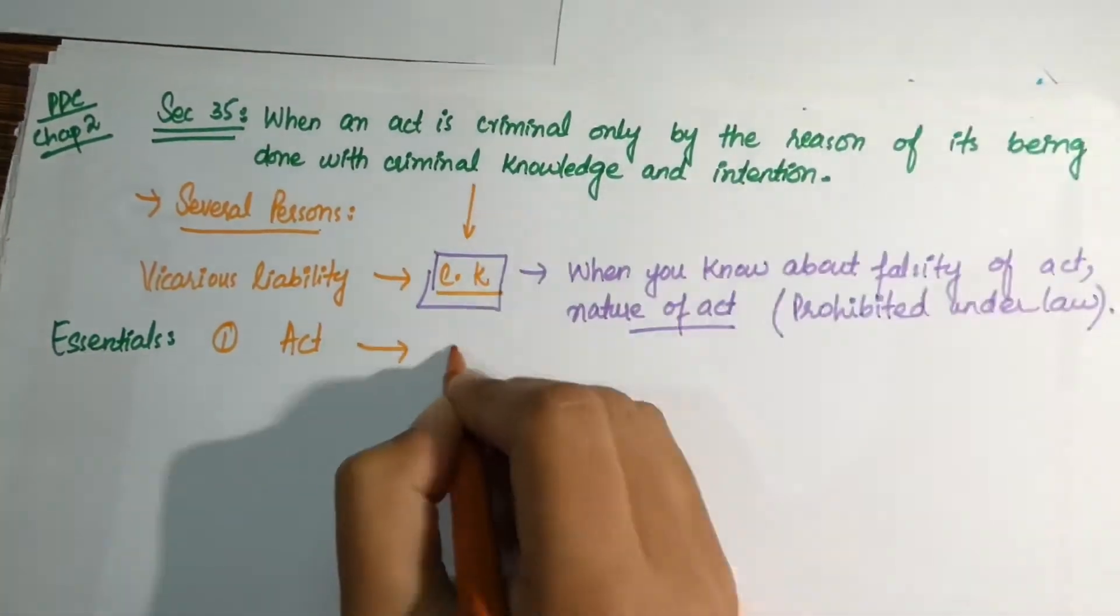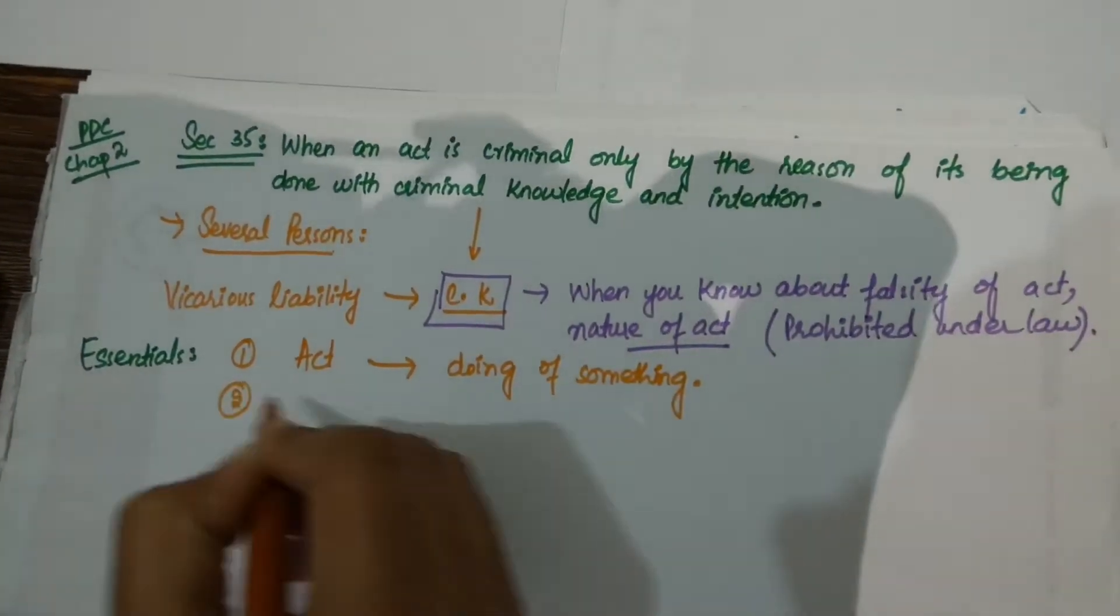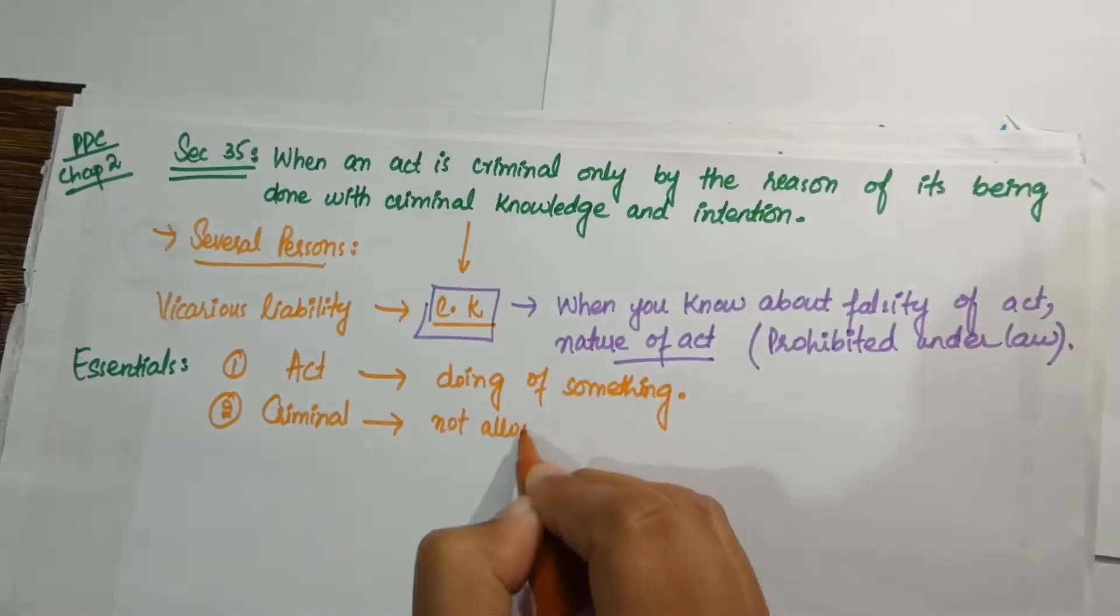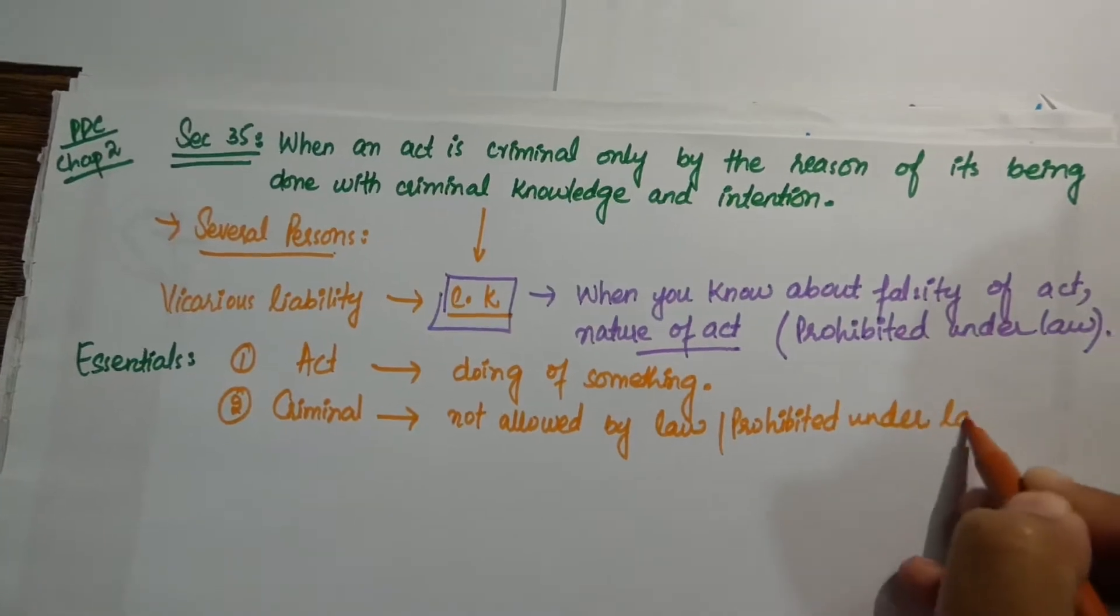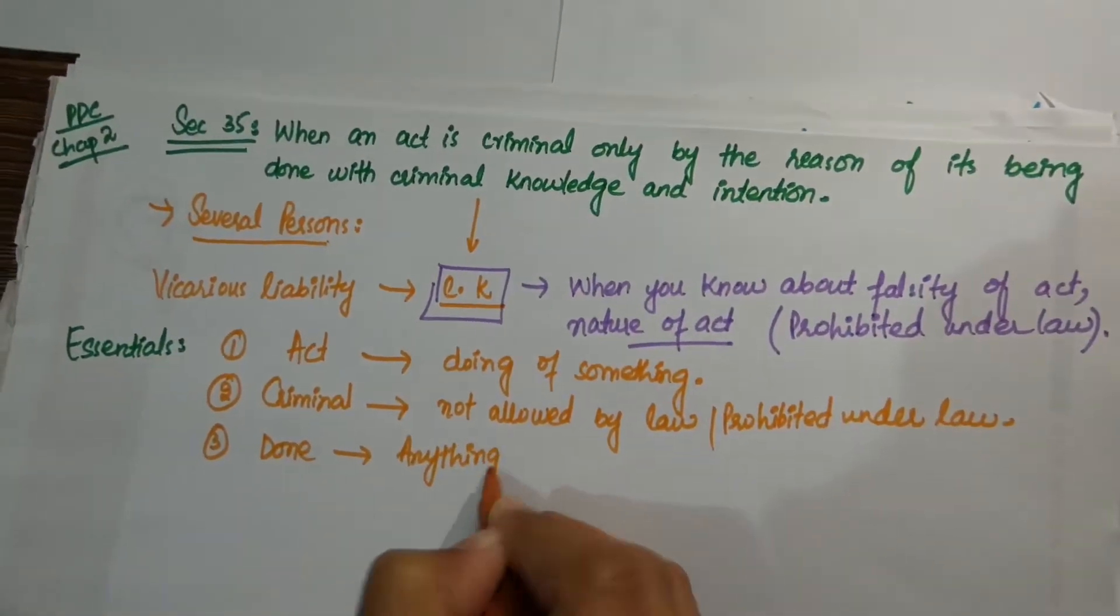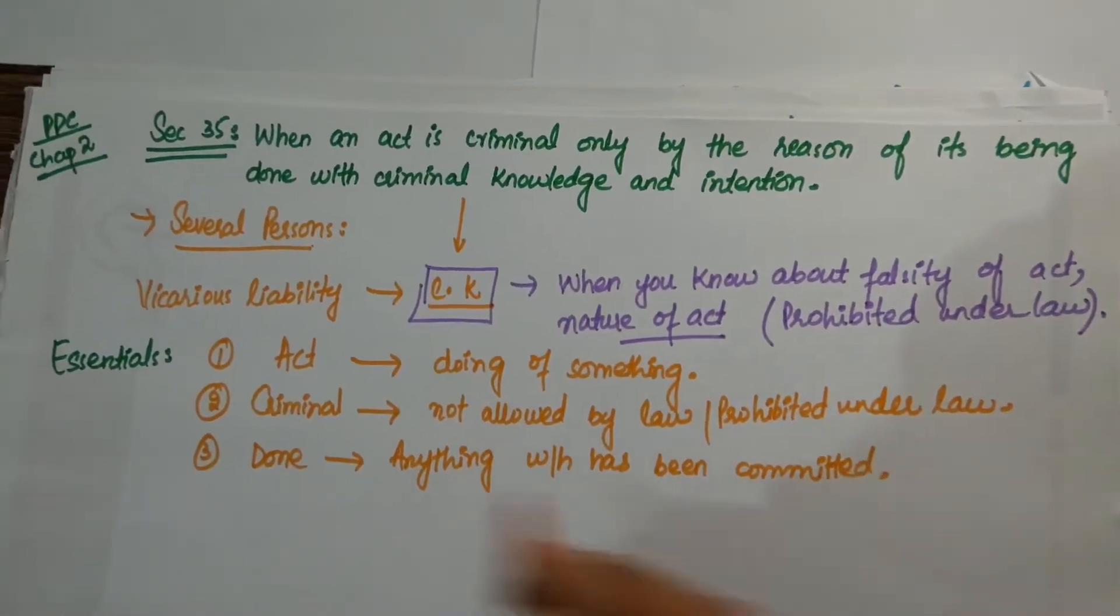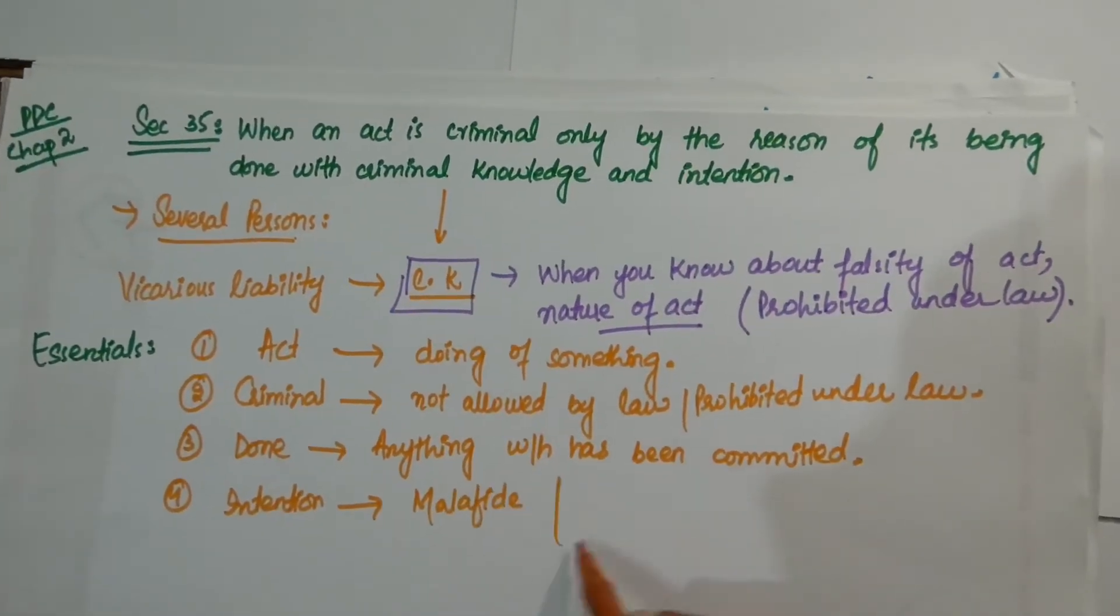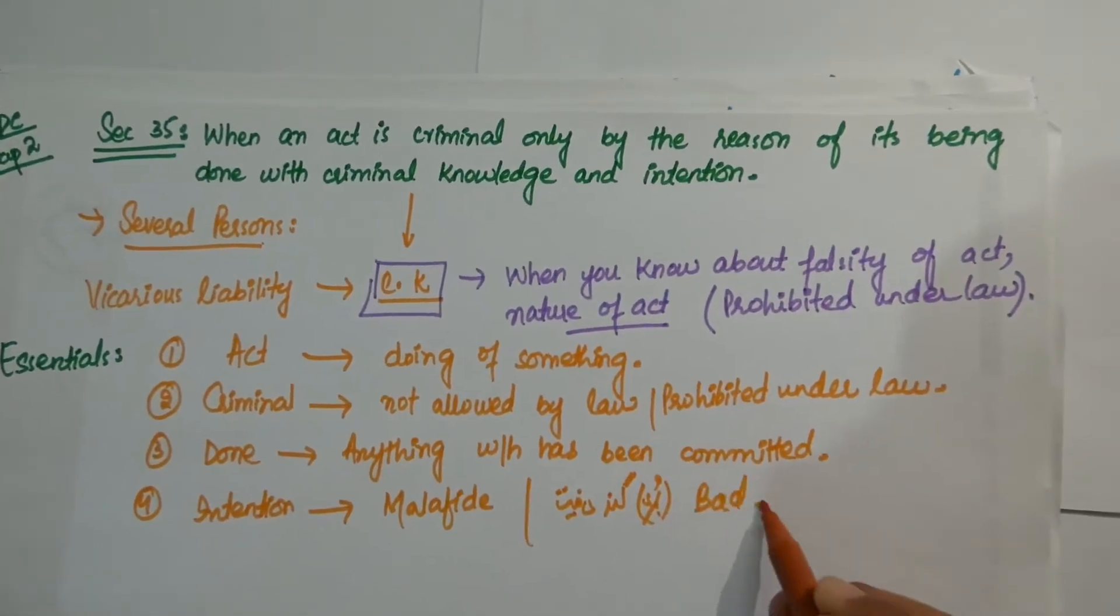This section includes mainly five essentials. Number one: act, which means doing of something. Second is criminal, anything which is not allowed by law, which is prohibited under law. Third is done, means anything which has been committed. And fourth is intention, which means malafide intentions, bad intentions for doing a criminal act.